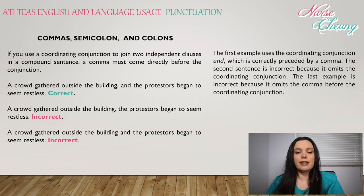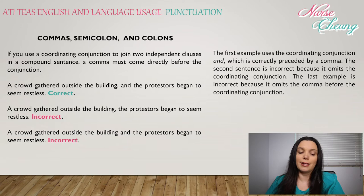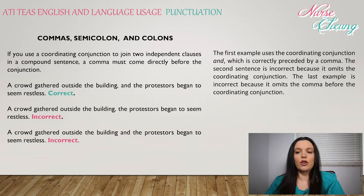For example: 'A crowd gathered outside the building, and the protesters began to seem restless.' — This is correct. 'A crowd gathered outside the building, the protesters began to seem restless.' — This is incorrect because 'the' is not a conjunction. 'A crowd gathered outside the building and the protesters began to seem restless.' — This is also incorrect because there is no comma. The first example correctly uses the coordinating conjunction 'and' preceded by a comma; the second omits the conjunction; the third omits the comma.